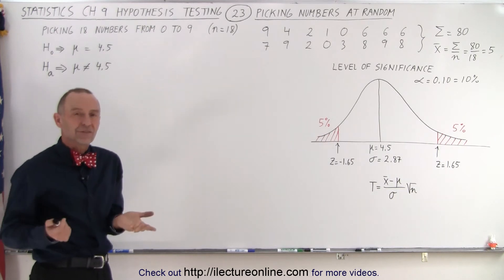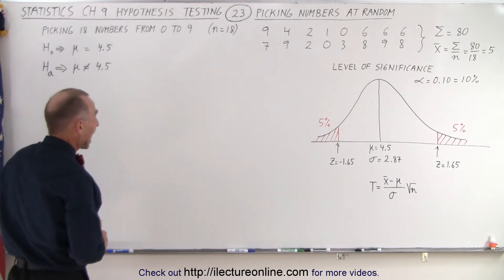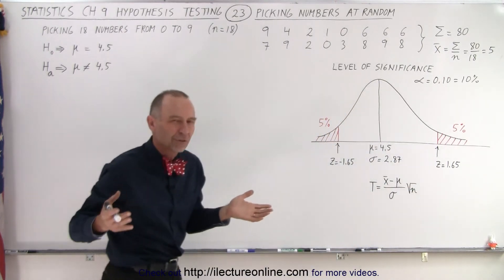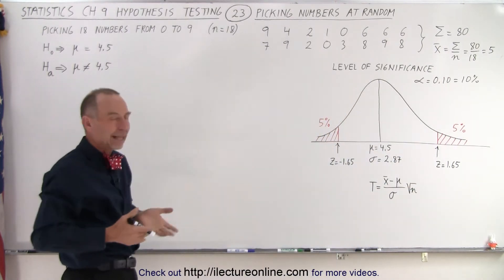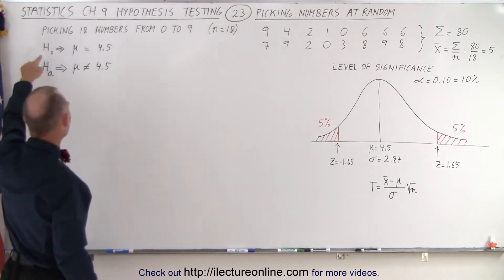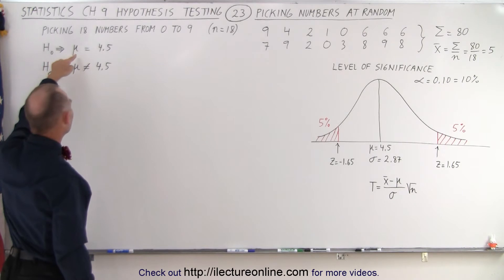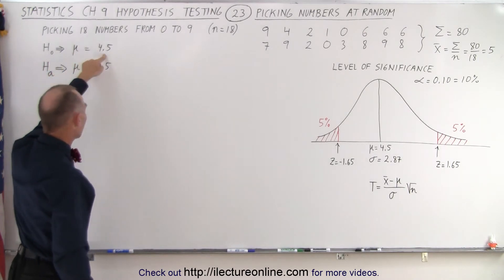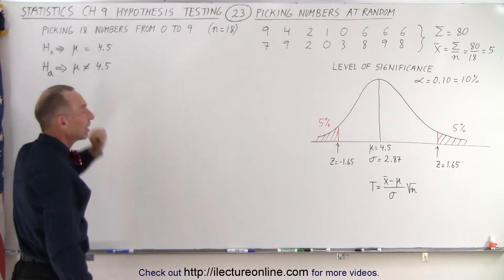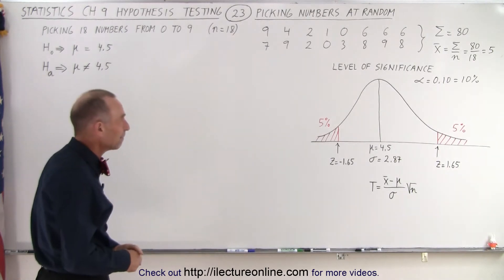Let's do a hypothesis test. Let's check to see, at a level of significance of 10%, does that meet the mustard, so to speak? Does that seem to indicate that was a good sample that we took? So the null hypothesis is going to tell us that the average should be 4.5 and the alternate hypothesis is that the average is not equal to 4.5. So let's try and see what we get.